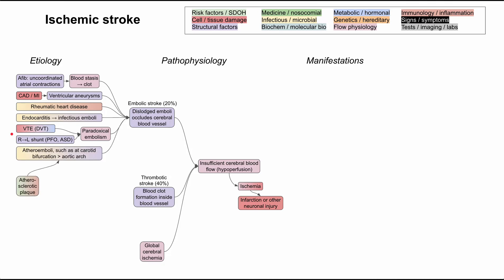Lastly, for embolic strokes, you can have an atheroemboli. This starts as an atherosclerotic plaque that breaks off, it dislodges, and it ends up occluding the cerebral blood vessels. The atheroemboli most commonly occur at the carotid bifurcation and can also occur at the aortic arch and other places. But these are the two most common places to have atheroemboli that end up being thrown as a stroke.